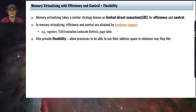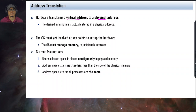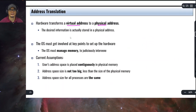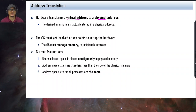Remember that in order to achieve efficient and controlled memory virtualization, we need some hardware support. And the OS must at some point perform some initialization and set up additional data structures and hardware components in order to achieve the flexibility, control, and efficiency objectives presented earlier.